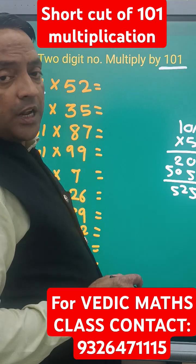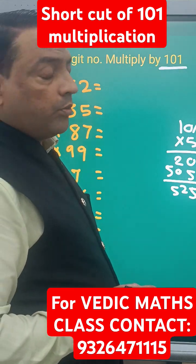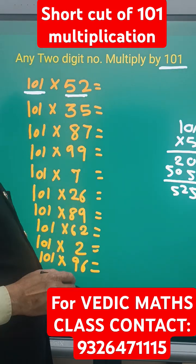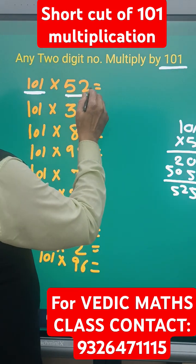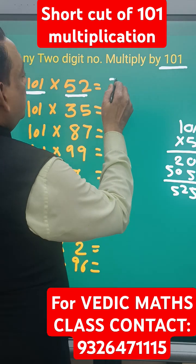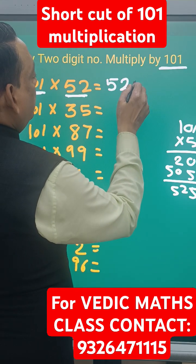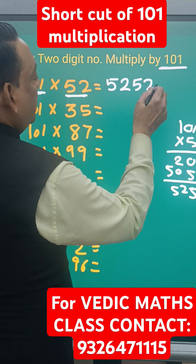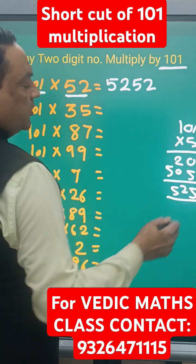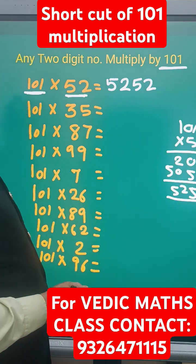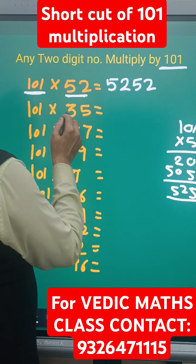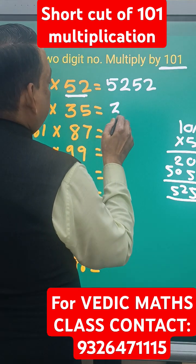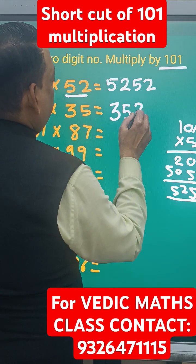So the direct rule is: whenever any number is multiplied by 101, the same number appears twice. If it is 52, the answer is 5252. You can check — the answer is 5252. Same way, 101 into 35, the answer is 3535.